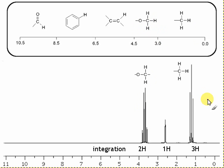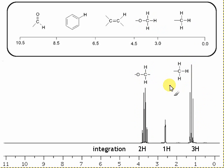We could imagine that this three-hydrogen peak is just a CH3 group, whereas this two-hydrogen peak is a CH2 group next to oxygen. If we look at the coupling, this one's a singlet, so no coupling.